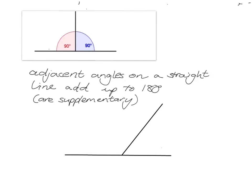Adjacent angles on a straight line add up to 180 degrees. What does 'adjacent' mean? In everyday English, adjacent just means next to each other — and it's the same idea with angles. These two angles here are adjacent because they're next to each other, they share a common vertex — a common point where the lines meet — and they share a common arm as well.